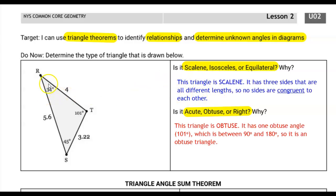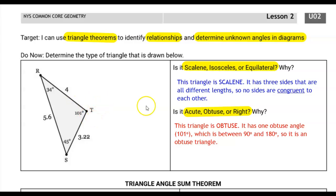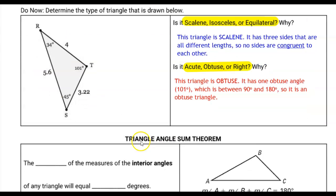For this example, we were able to identify that it is scalene — it's got three sides that are all different lengths, so no sides are congruent to each other. If it had two congruent sides it would be isosceles, and if all three sides were congruent we'd call it equilateral. To identify it by its angles, we check for an obtuse or right angle. This is an obtuse angle — between 90 and 180 degrees — so it is an obtuse triangle.